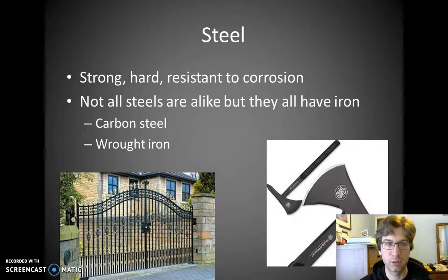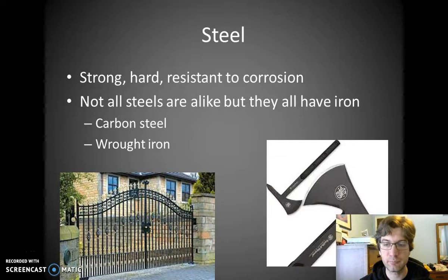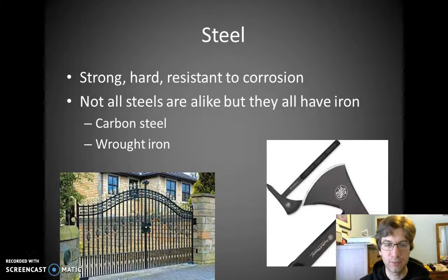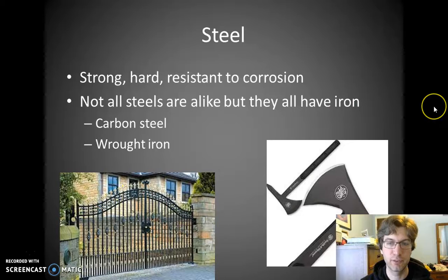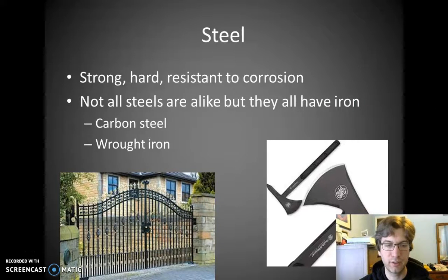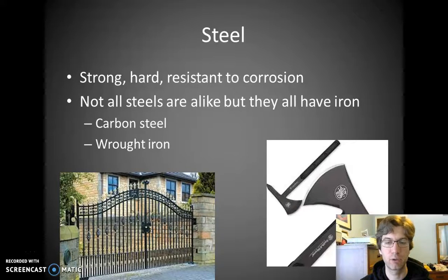For example, you can have carbon steel, which is going to be an extremely strong and durable steel with a high amount of carbon relative to iron in it. Or you can get a wrought iron type, which is what this gate is made out of. You've probably seen fences made out of wrought iron — it's more malleable, you can make different shapes out of it more easily, so you tend to get that artsy look. But it's also very weak compared to carbon steel.